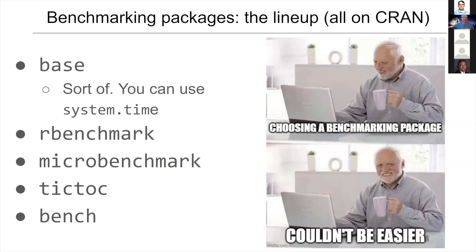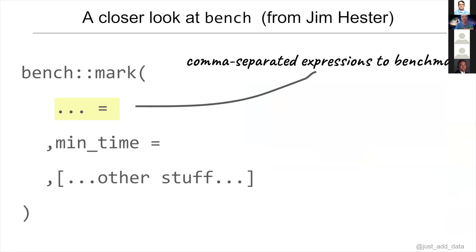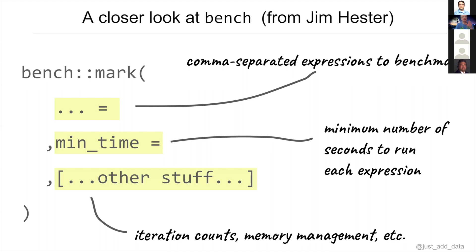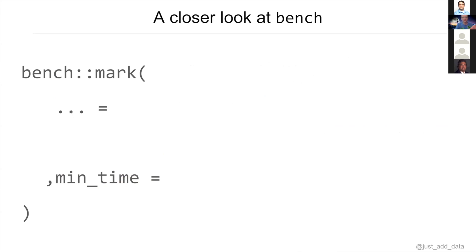I'm going to focus on bench because it's pretty easy to use with nice outputs. The central function in the bench package is called mark — cutesy, because you get to say 'bench::mark.' The first argument is three dots, where you pass comma-separated expressions to benchmark. There's also a min_time argument, which is the minimum number of seconds to run each expression. Bench actually runs your expressions over and over and over again to get a good estimate of the average time it takes.